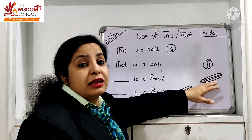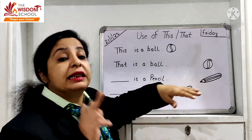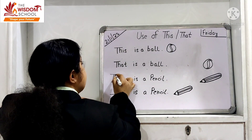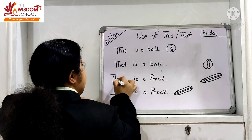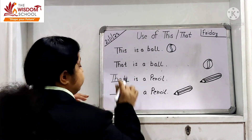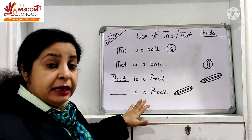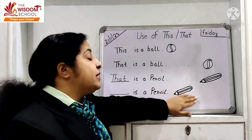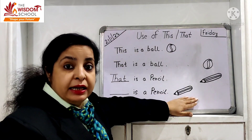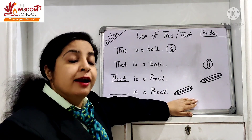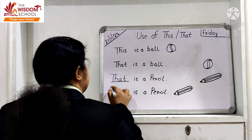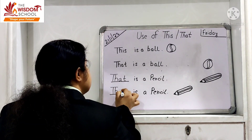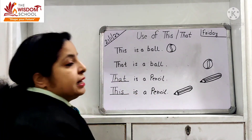Toh door ke liye hum kya use karte hai? That. Toh yahaan par kya aajayega? That. 'That is a pencil.' Aur agar ye pencil near hai, paas hai, toh paas ki cheez ke liye kya likhti hai? This. 'This is a pencil.'